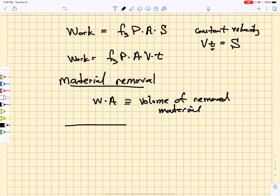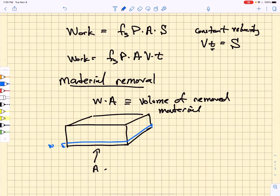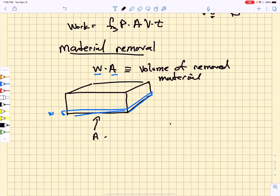If we look sideways on that block, you know that we have a cross-sectional area associated with the wear surface. Over time we remove a depth w, then we have removed a volume equal to w times that cross-sectional area.